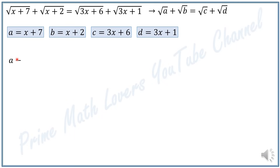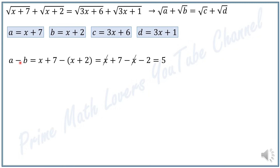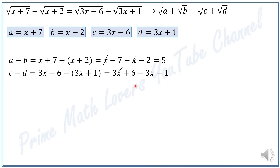In the next step I calculate a minus b. a is x + 7 and b is x + 2, so it will be x + 7 − x − 2, and I can cancel the x terms, giving a − b = 5. Then I calculate c minus d. c is 3x + 6 and d is 3x + 1, so 3x + 6 − 3x − 1 = 5. So c − d = 5, and therefore a − b is equal to c − d.